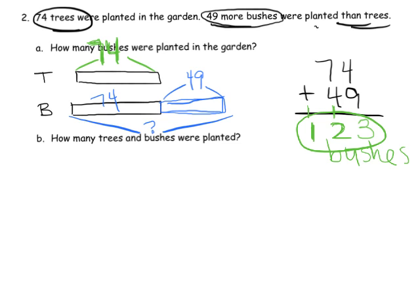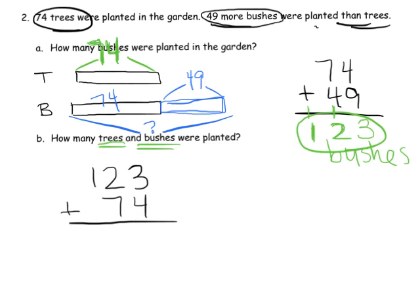Now how many trees and bushes were planted total? We have 123 bushes and 74 trees. Teachers and parents, make sure students are lining up the 1s with the 1s, 10s with the 10s, and 100s with the 100s. Adding the 1s: 3 plus 4 is 7 — no bundling needed. Adding the 10s: 2 plus 7 is 9 — no bundling needed. Adding the 100s: just 1 hundred. Our answer is 197 total trees and bushes.